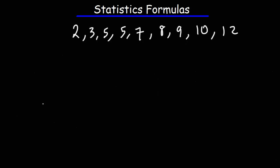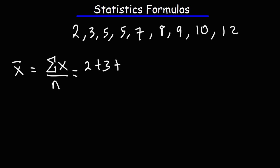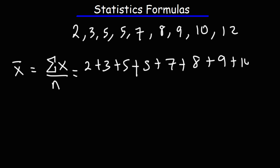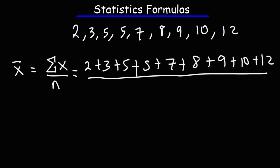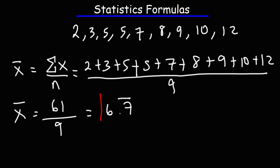The next equation is the average, also known as the arithmetic mean or the sample mean. The sample mean is the sum of all the data points divided by n. Adding up all nine numbers in this data set, the sum is 61. Dividing by 9 gives 6.7 repeating, so that is the arithmetic mean of the data set.